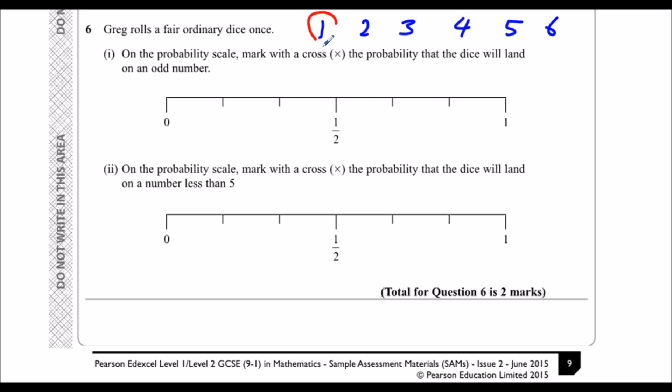So odd numbers, we've got one, two, three out of six. So three out of six is the same as a half, 50% chance. So odd number on the half.